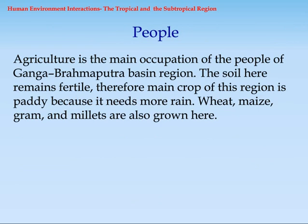People: Agriculture is the main occupation of the people of Ganga-Brahmaputra Basin region. The soil here remains fertile. Therefore, the main crop of this region is paddy because it needs more rain. Wheat, Maize, and Grand Millets are also grown here.